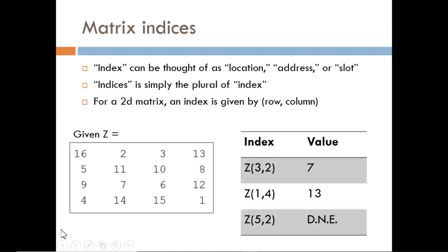Let's look at matrix Z again. Z(3,2) goes into that matrix and pulls out the value located in the third row and second column, which happens to be a 7.